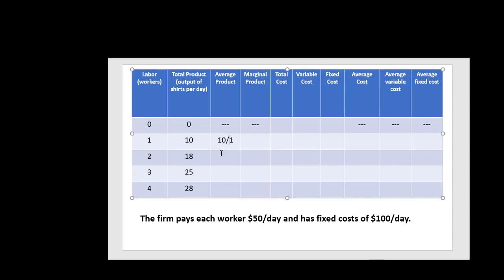10 divided by 1. 18 divided by 2. I'm not going to simplify these so you can just better see where the calculations are coming from. When we have 3 workers, they produce a total of 25 units of output, so the average output per worker is 25 divided by 3. And finally, 28 divided by 4 is the average product when we hire 4 workers.